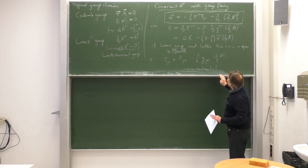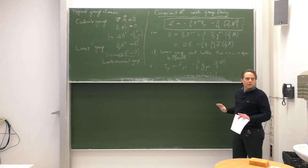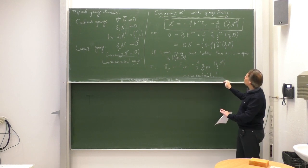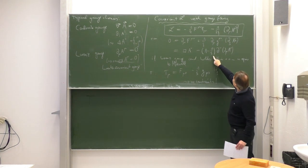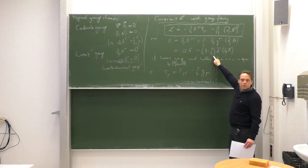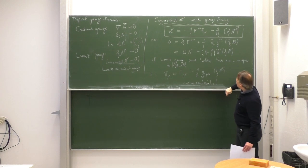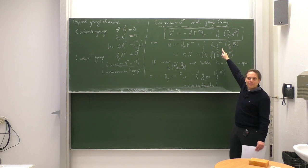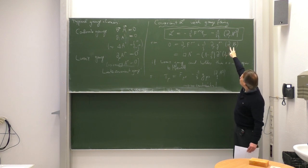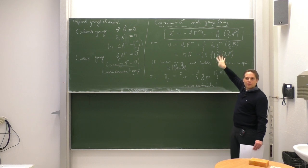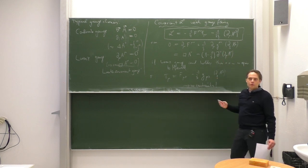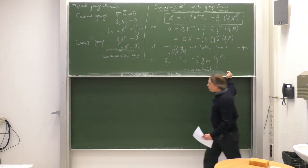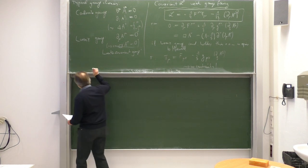Maybe it's not obvious, but there is another choice which is also very useful: xi equal to 0, which gives something called Landau gauge. Of course, then the term in the Lagrangian diverges, so it's not obviously possible to take xi to 0 in the Lagrangian, but in other expressions you can take xi to 0, and that is then also a very nice simplification. But we will use xi equal to 1.